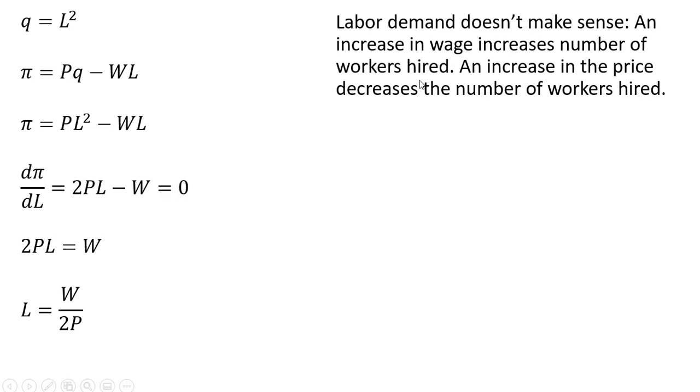This labor demand doesn't make sense. Here as wages go up, the firm would want to hire more workers. That seems kind of strange that the labor demand curve would slope upwards. Also notice if the price of the output good were to increase, if P got bigger, the firm would want to hire fewer workers. So this really doesn't make any sense here.